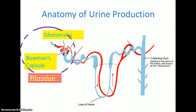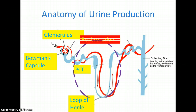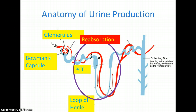The next step happens in the proximal convoluted tubule and the loop of Henle — that's reabsorption. We probably took too much stuff out of the blood, so let's put some water and some solutes back in. That reabsorption happens in the PCT and the loop of Henle.